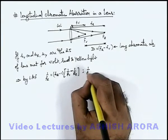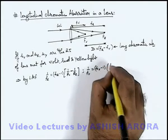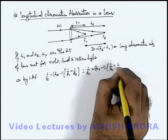And here 1 by focal length for violet light we can write mu_v minus 1, 1/r_1 minus 1/r_2.